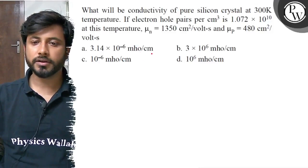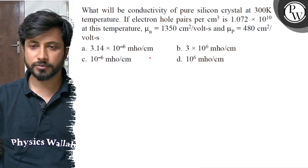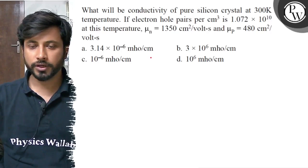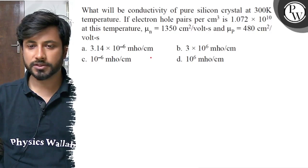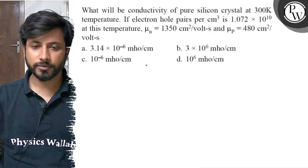What will be the conductivity of pure silicon crystal at 300 Kelvin temperature if electron hole pairs per centimeter cube is 1.072 into 10 to the power 10 at this temperature, mu n equals to 1350 centimeter square per volt second, mu p equals to 480 centimeter square per volt seconds. Option a: 3.14 into 10 to the power minus